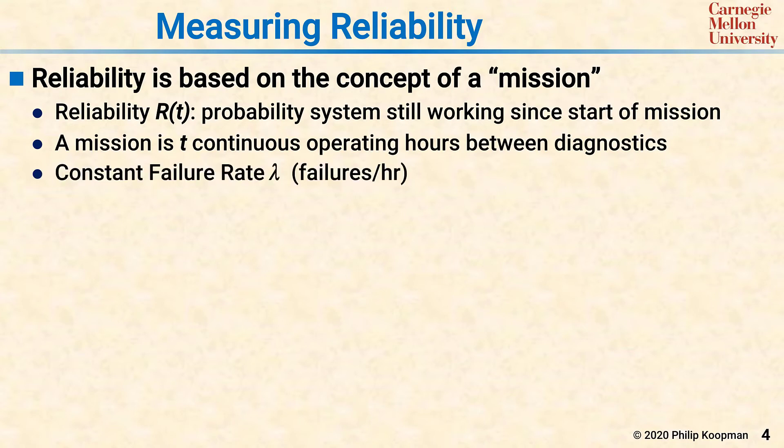The final term in the reliability equation is the failure rate, lambda, which is expressed in failures per hour. There is an assumption of random independent failures, which is generally useful for electronic components and computers, but might not apply to everything, especially mechanical components.